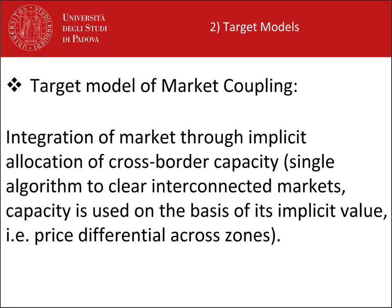Let us briefly review these four target models. Market coupling is the integration of several markets through an implicit allocation of cross-border capacity. In particular, there is a single algorithm among the several bidding zones that clears the market, with the same market rules for all markets involved. The cross-border capacity is used on the basis of its implicit value, meaning the value of the capacity for transmitting electricity. It is the price differential among zones that signals where transmission capacity is most valued.